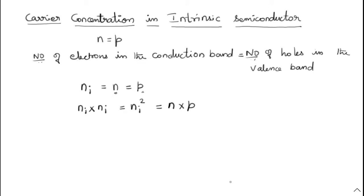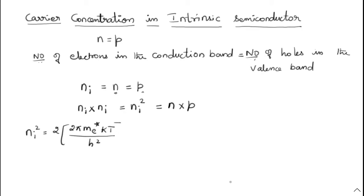Small n is the number of electrons in the conduction band. In the previous video we discussed the whole derivation and finally reached the formula. So Ni squared is equal to: the value of N is 2 into (2πM_e* KT divided by H²), whole power 3/2, and then exponential of (E_F minus E_C) divided by KT. This is the expression for N.